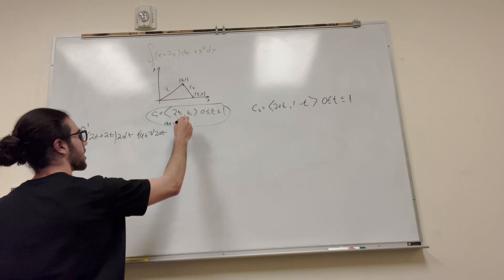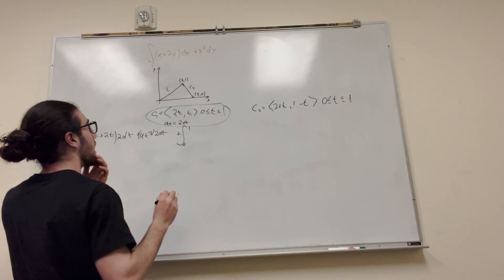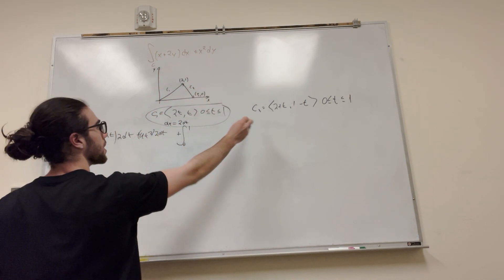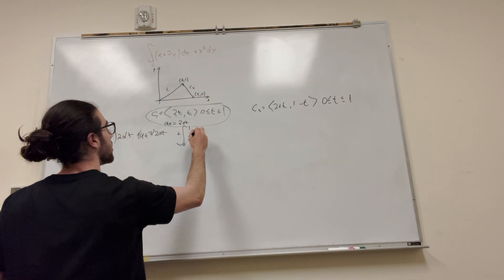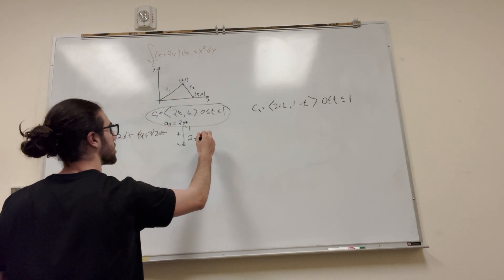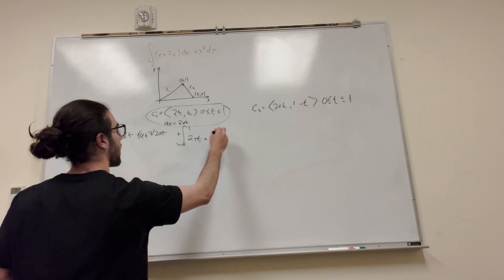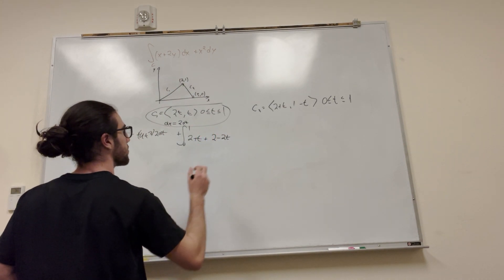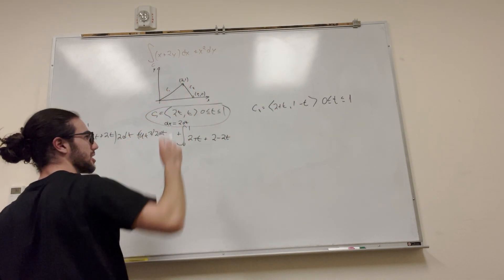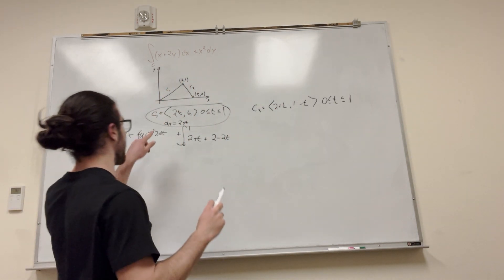So now for our next integral, it goes from 0 to 1. It's again x is equal to 2 + t this time, plus 2y which is plus 2(1 - t) = plus 2 - 2t. Now dx, we have to consider that it's our second integral and we can't just put in the 2.